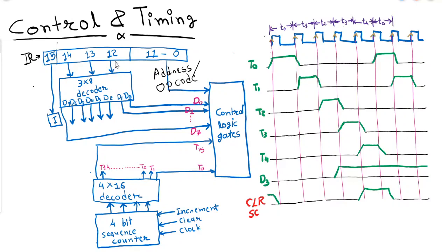Now let us look at bit numbers 12, 13, and 14, and how they play a key role. Bits 12, 13, and 14 are given to a 3×8 decoder. The output of this decoder ranges from D0 to D7. Bit number 15 is given to flip-flop I, which represents the addressing mode — if I is 0, it is direct addressing mode; if I is 1, it is indirect addressing mode.